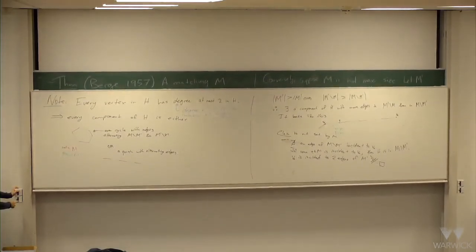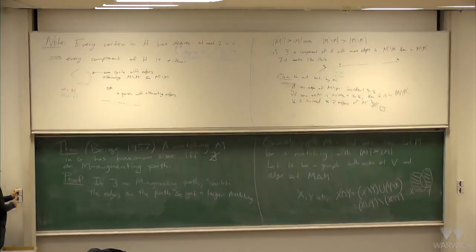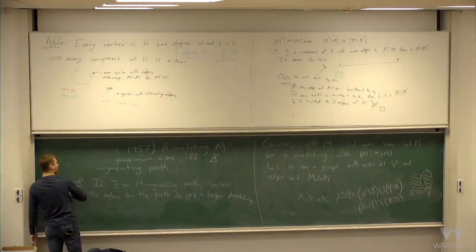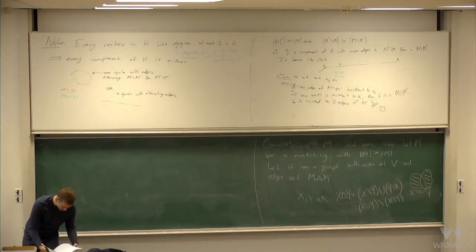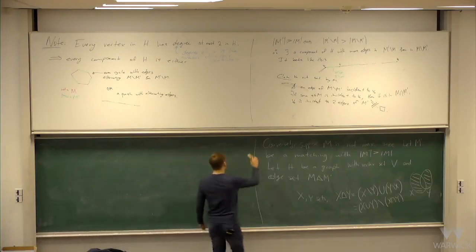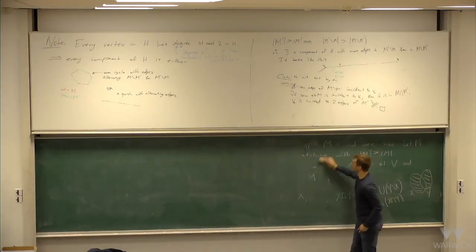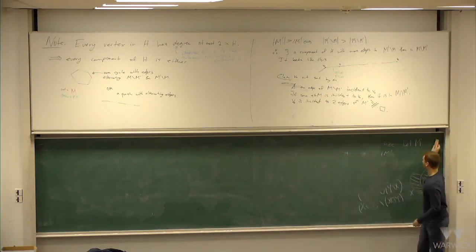That's kind of nice, because it says that if we want to find a big matching, it's the same thing as finding an augmenting path. So there's essentially only one way to increase the matching — you may as well just find an augmenting path. So I started off saying this week we'll talk about matchings in bipartite graphs, but I haven't told you anything about bipartite graphs yet. So far everything has been about general graphs, but now we'll turn our attention to bipartite graphs.